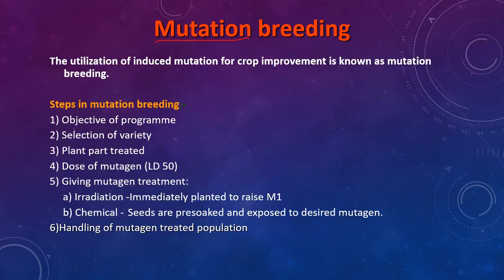Mutation breeding is the utilization of induced mutations for crop improvement. The basic steps involved: first, the objective of the program should be clearly mentioned. Second, which variety of plant will be used — obviously the best variety available. Third, which part of the plant should be treated. Fourth, the amount of dosage to be used.